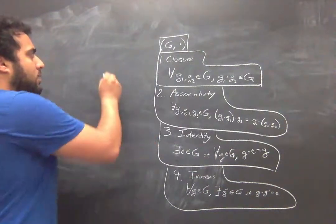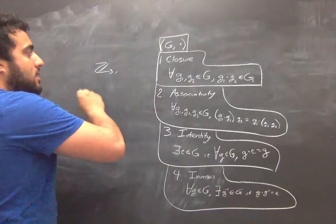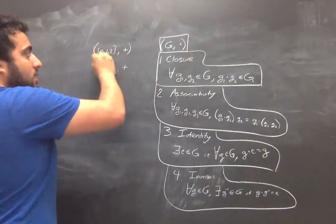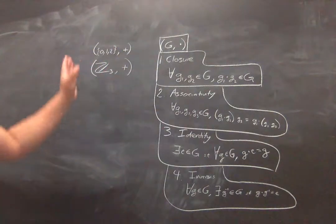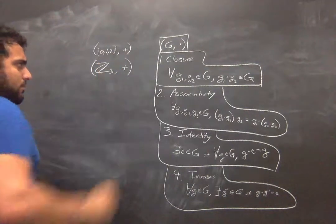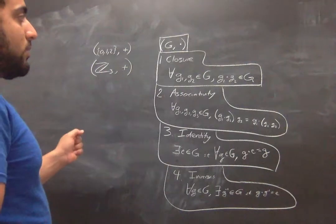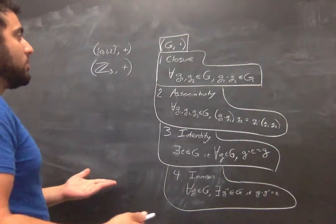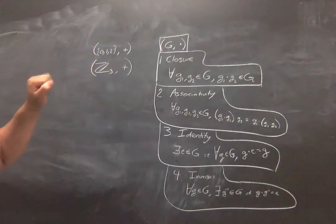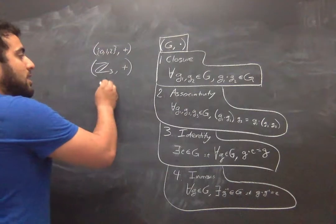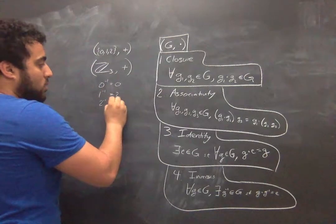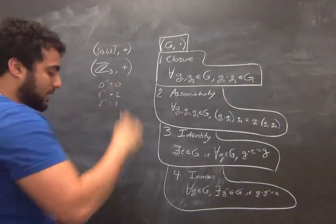Here's a very simple example of a group: the integers mod 3. Our set is just the numbers zero, one, two, and our operation is ordinary modular addition — addition which wraps around once you get to three, so three moves back to zero, four goes to one, five goes to two, and so on. Why is this a group? It's closed: add two integers mod 3, you always get another integer mod 3. It's associative: ordinary addition is associative. It has an identity because zero is in the group. And it has inverses: the inverse of zero is zero, the inverse of one is two, and the inverse of two is one.